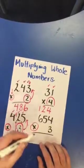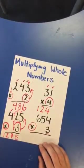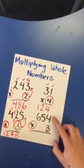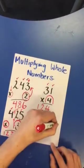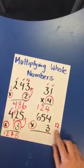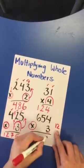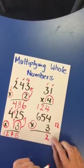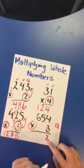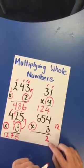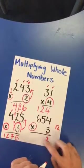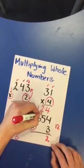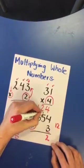We are doing multiply. And we always start here. 3 times 4 equals 12. Think about the number 12. The number in the units column goes here.